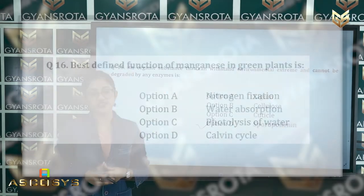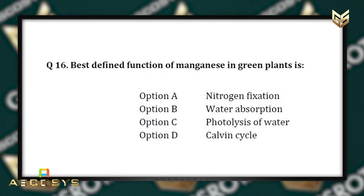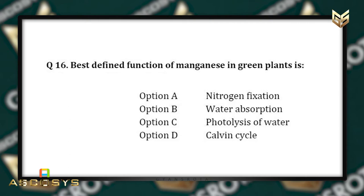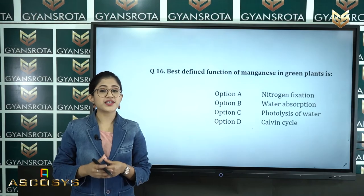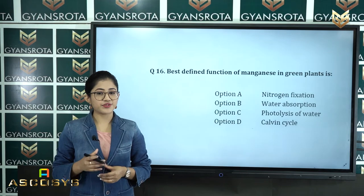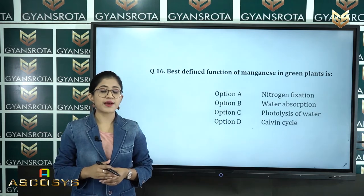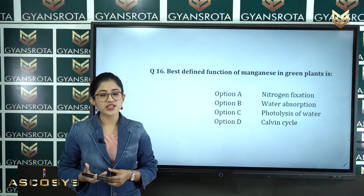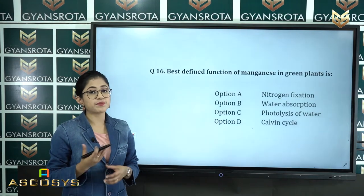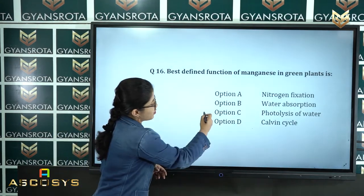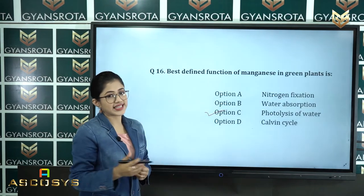Question number 16: Best defined function of manganese in green plants is — option A nitrogen fixation, option B water absorption, option C photolysis of water, option D Calvin cycle. This is from the chapter Mineral Nutrients. The best defined function of manganese in green plants is the photolysis of water — splitting of water. Option C is the correct answer.